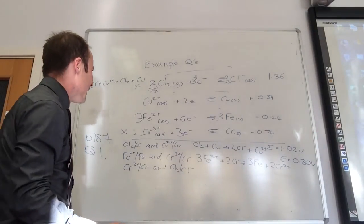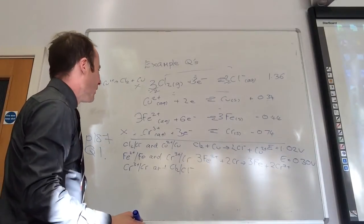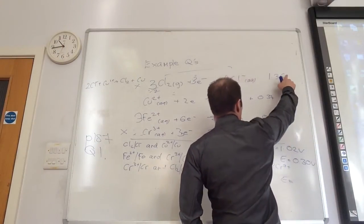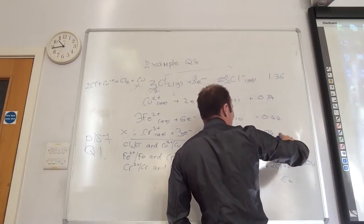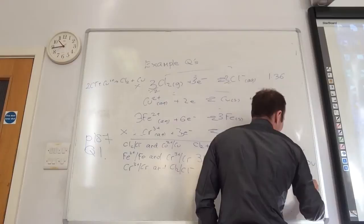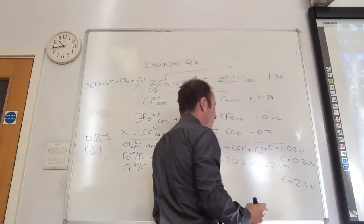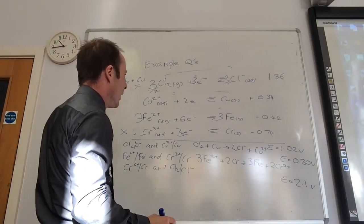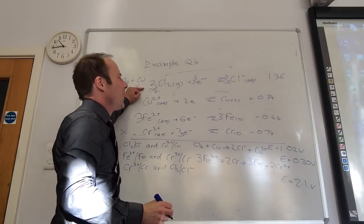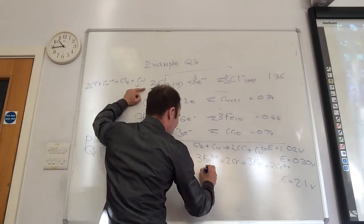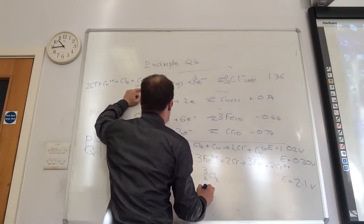So first of all, let's do the easy thing. What is going to be the voltage between that one and that one? The difference between 1.36 and minus 0.74? 2.1 volts. Cool. What will be the reaction that will take place? Well, this one by far is the most positive.